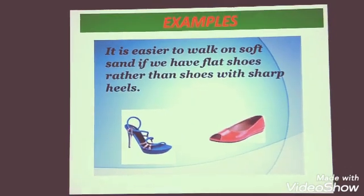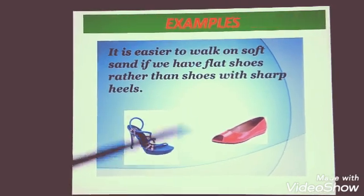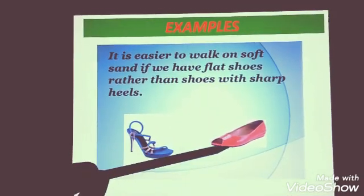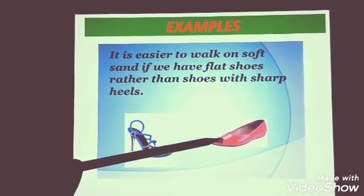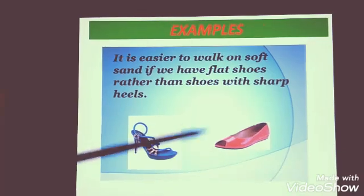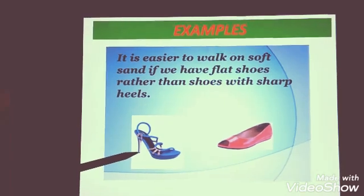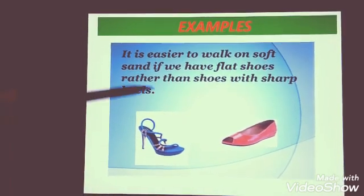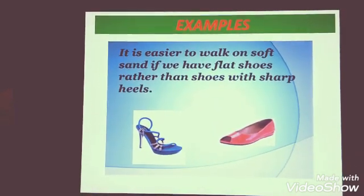Now, these are the examples which will make it more clear how area and pressure are related. In this case, you can see the shoe is having a flat bottom. So, the area is more and that is why these shoes will not sink in the soft surfaces or in the sand because the area is more, the pressure exerted will be less. In this case, because the area of the heel is very small, they will sink in the soft ground or surface because the area is less, so the pressure increases.